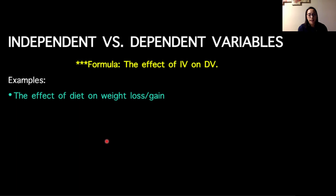I've got another example here, looking at the effect of diet on weight loss or weight gain. Based on our formula, diet or type of diet is our independent variable, and the weight loss or gain that we're measuring from people would be an example of a dependent variable.